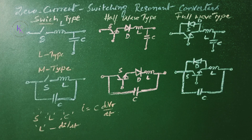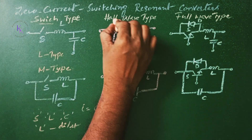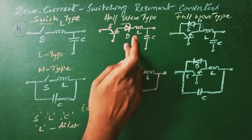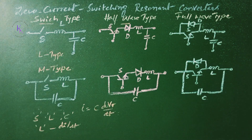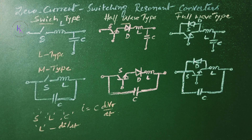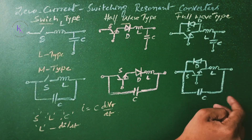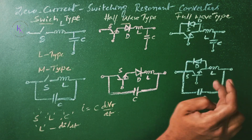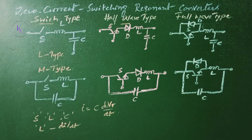The switch can be implemented in either a half-wave configuration — L type and M type — where diode D allows unidirectional current flow, or in full-wave type configurations — L type and M type — where the switch current flows bidirectionally.